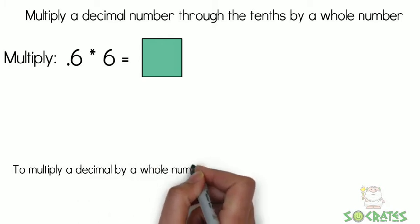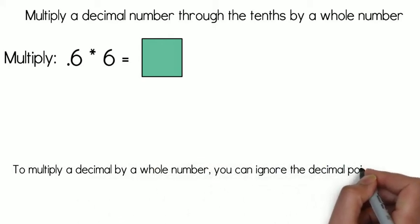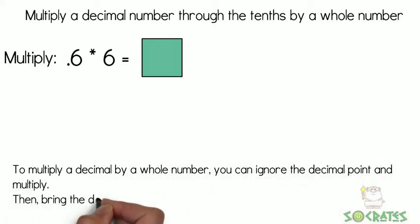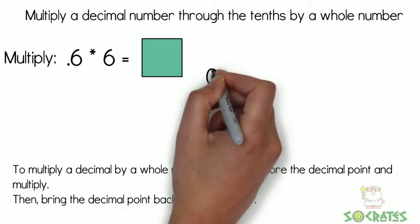To multiply a decimal by a whole number, you can ignore the decimal point and multiply. Then you bring the decimal point back for the answer. Let's look.